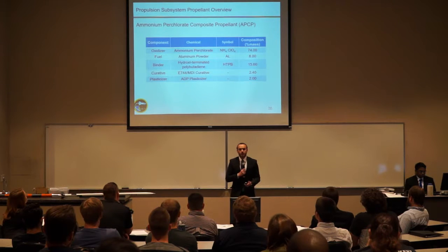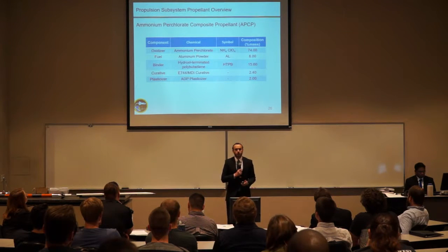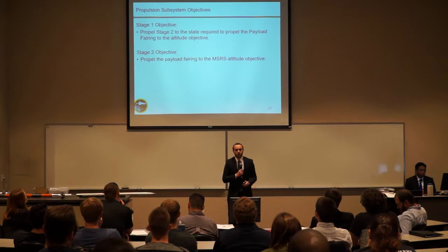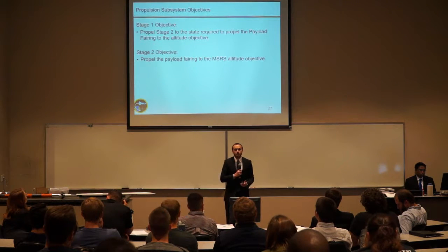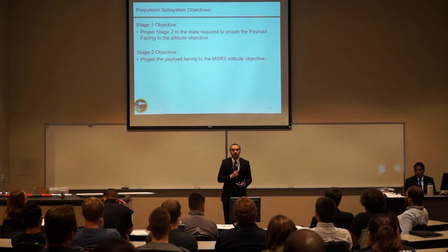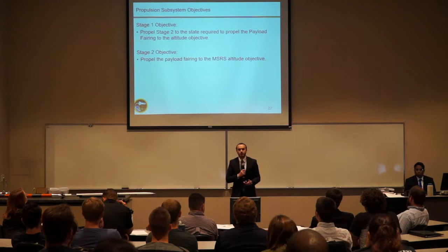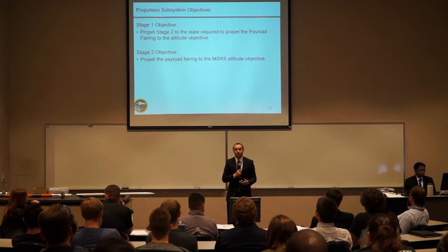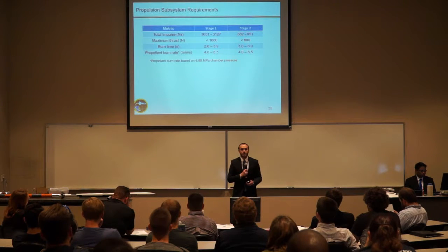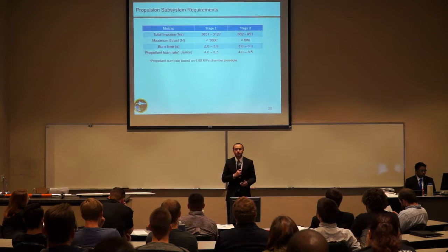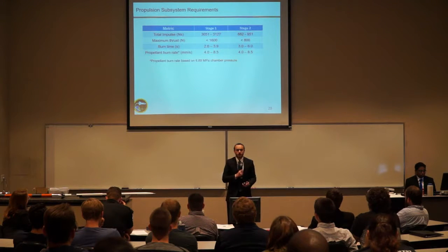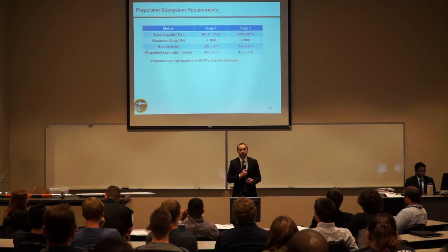The propellant uses an ammonium perchlorate oxidizer, aluminum powder fuel, and an HTPB binder with a curative and a plasticizer. The objective of Stage 1 propulsion is to propel Stage 2 and the payload fairing to a state where Stage 2 can get the payload fairing to the altitude objective. Similarly, Stage 2 propulsion should propel the payload fairing to the MSRS altitude objective. Requirements include total impulse for each stage, maximum thrust to limit acceleration, burn time requirements, and a propellant burn rate requirement.